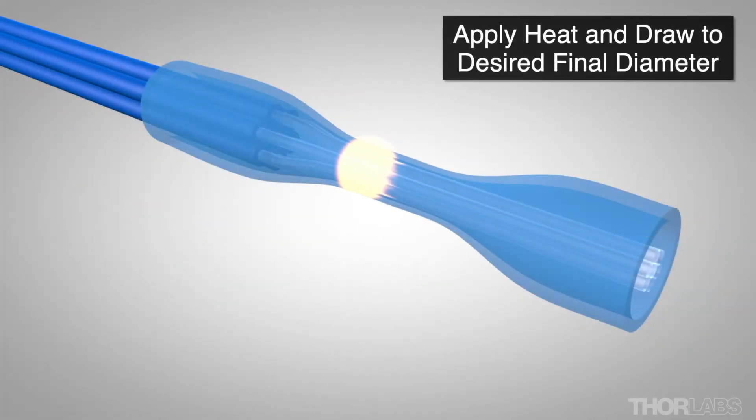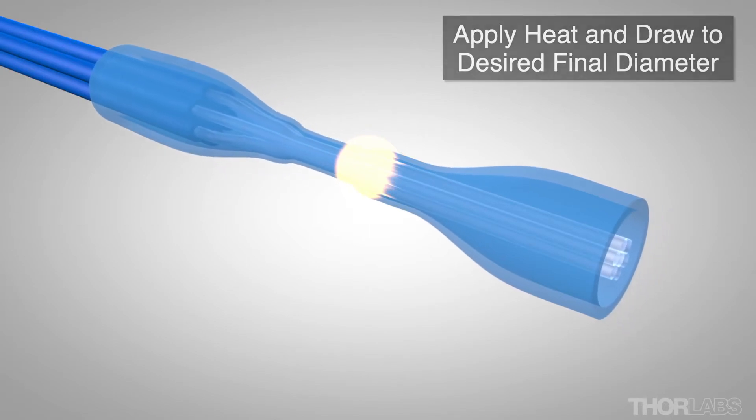Next, heat is applied to collapse the tube around the fibers, and the bundle is drawn to the desired final diameter.